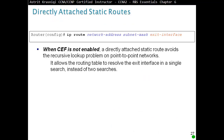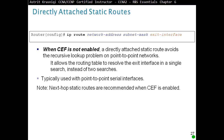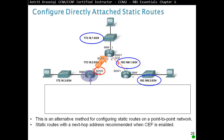Directly attached static routes: when CEF is not enabled, a directly attached static route avoids the recursive lookup problem on point-to-point networks. It allows the routing table to resolve the exit interface in a single search instead of two searches, and is typically used with point-to-point serial interfaces. Note: next hop static routes are recommended when CEF is enabled; if CEF is disabled, then the exit interface is better. So: ip route, destination network address, destination subnet mask, then our exit interface.